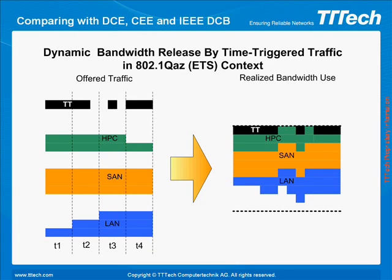On this slide, we can see how time-triggered traffic can be integrated with low priority standard LAN, medium priority SAN, and high priority low latency traffic. Very critical data streams which require constant quality of service and minimum latency and jitter are handled using time-triggered communication.